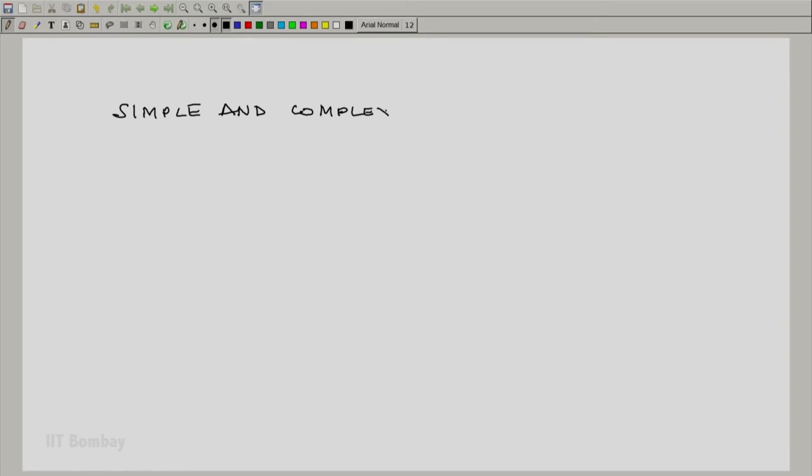We now define what we mean by simple systems and complex systems. The main issue here is the modes of work for a system. We know that a given system can have any number of modes of work.